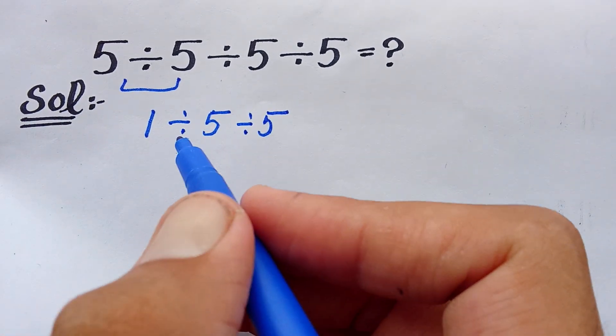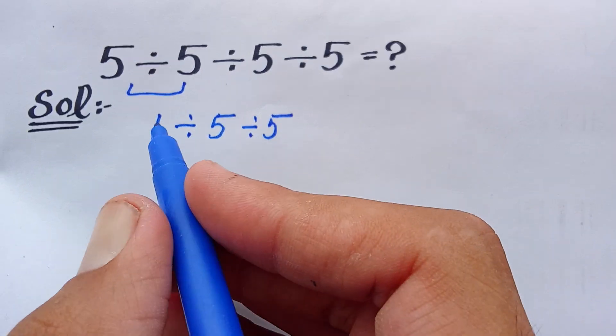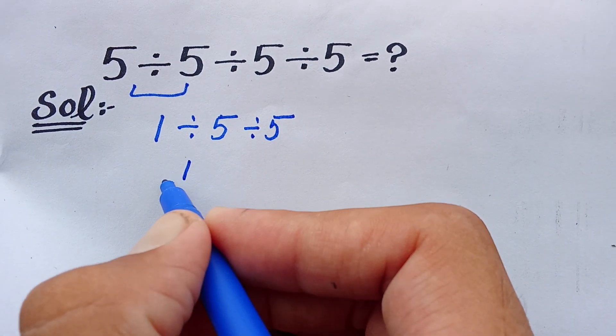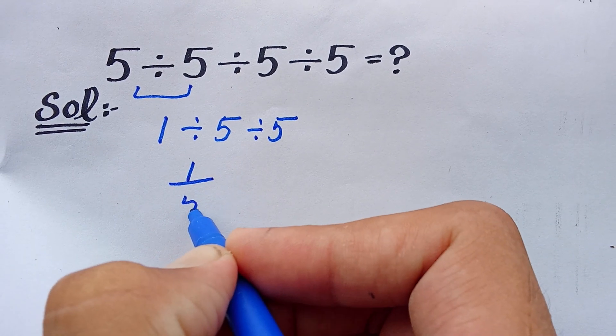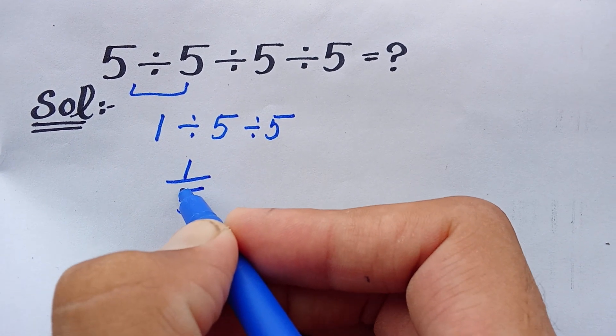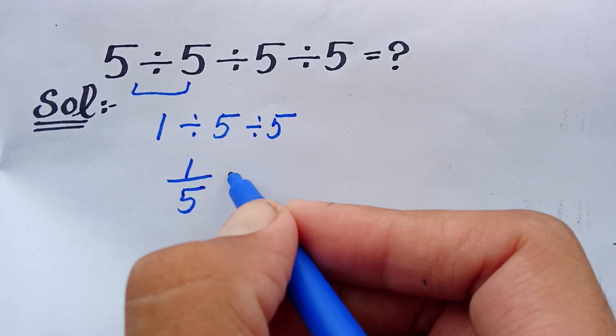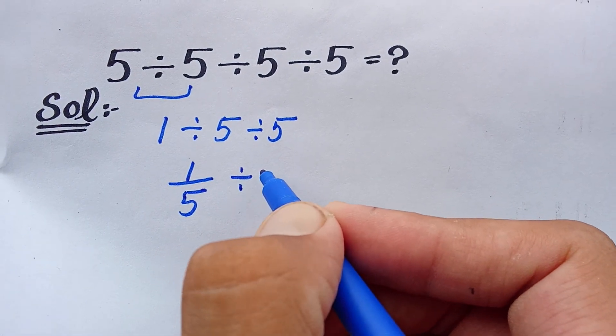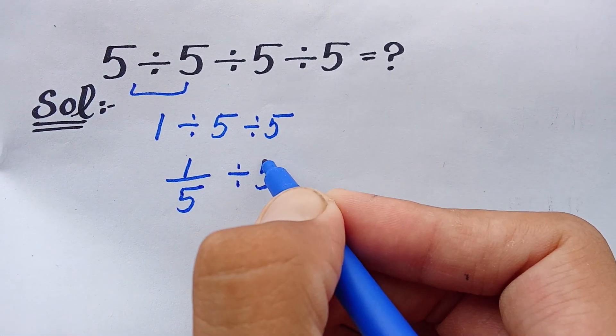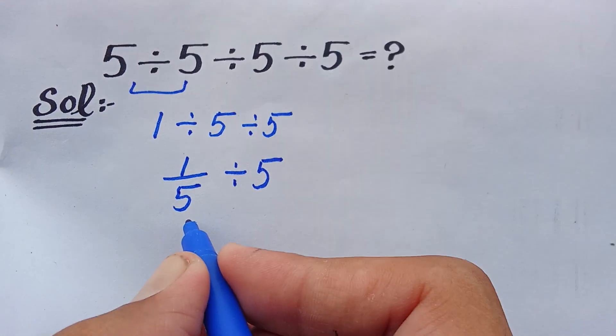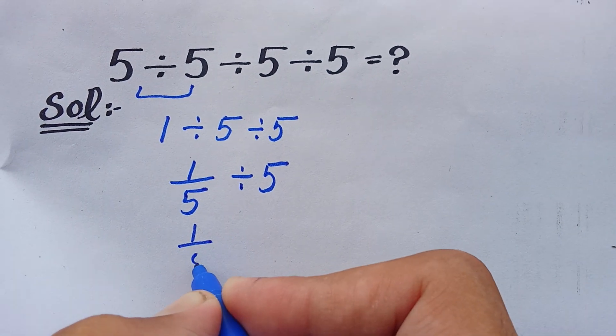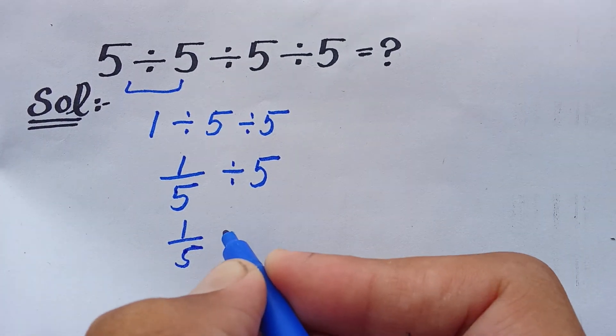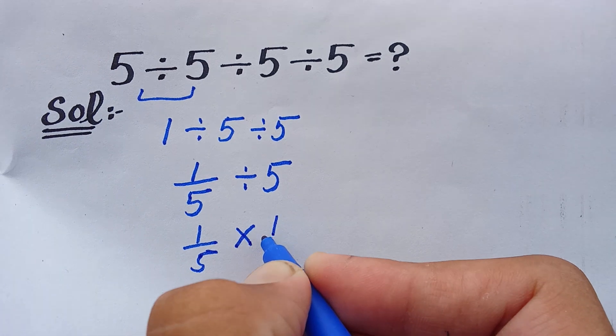So again, 1 divided by 5 is equal to 1 over 5. I can write 1 divided 5 as 1 over 5 divided by 5. Okay, so according to KCF, 1 over 5 multiply by 1 over 5.